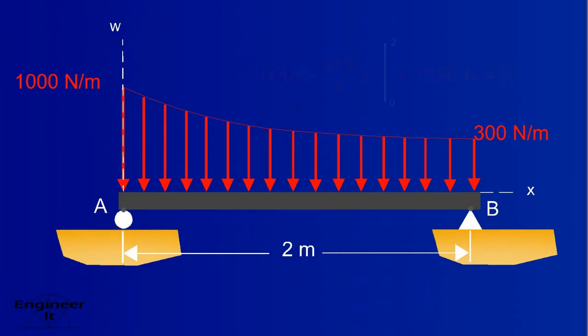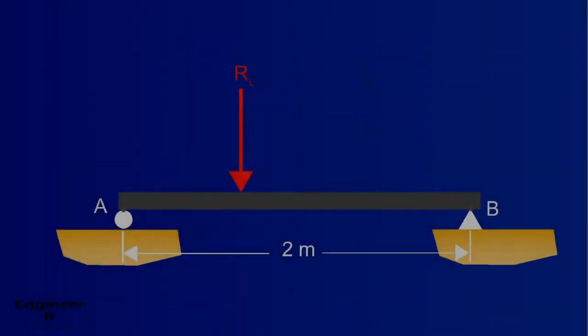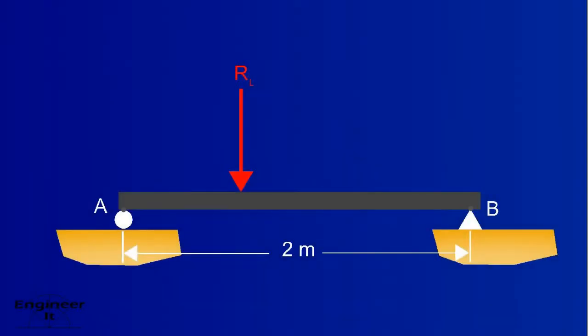Now that the resultant of the load has been found, we can replace the force with it — but only to find the reactions. However, there is a problem: where is the resultant being applied?